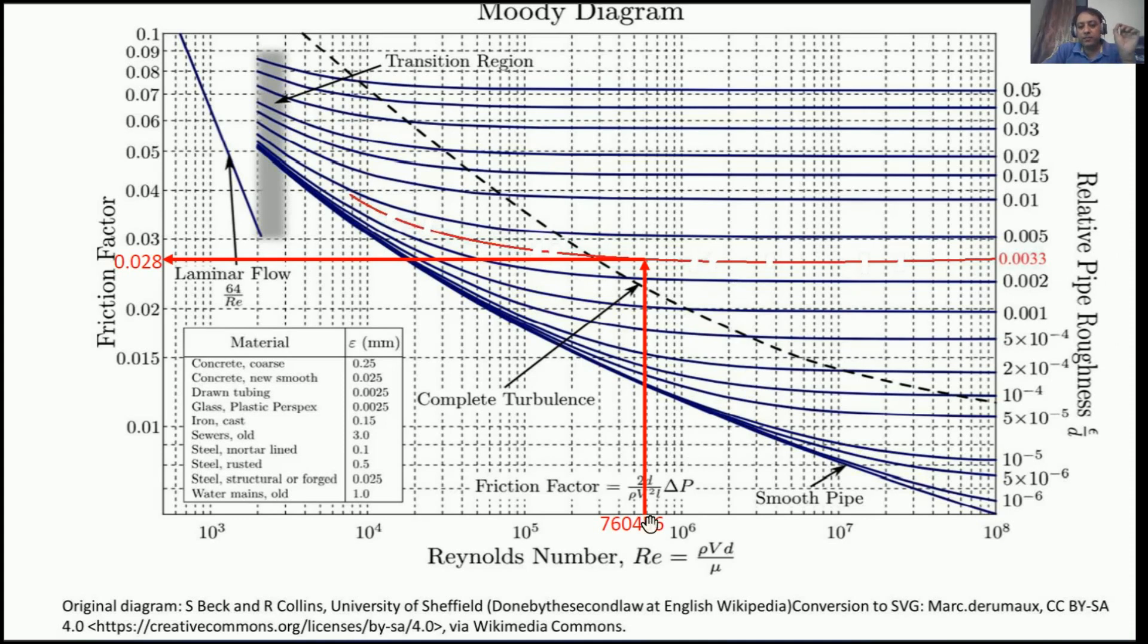Now what happens - the Reynolds number is this and the constant relative pipe roughness line is this. Wherever these two lines are intersecting, from that point go toward the left. Wherever this is intersecting the left-hand side y-axis, that is the friction factor. You can see it is intersecting over here. This is 0.02 and this is 0.03, so it is closer to 0.03. We can predict it is 0.028. So the friction factor f = 0.028. This is how we can use Moody's chart to find the friction factor.